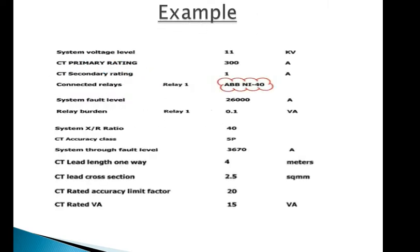Now let's see an example from a previous project for protection CT selection. This CT was used for ABB REF615 or MAKE NI40 relay for an 11kV system having 300/1 ampere CT ratio. The relay burden is 0.1VA, CT accuracy class is 5P, connecting lead length is 4 meters, and lead cross-section is 2.5 square mm. Burden is 1VA. These are the data required for the calculation.